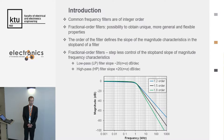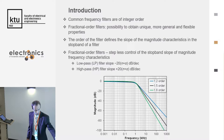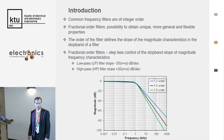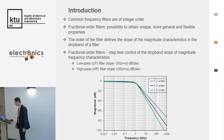You can see here an example: the magnitude frequency characteristic of a low-pass filter with order 1.2, 1.5, and 1.8. The slope of the characteristic is dependent on this order. So you can set this slope in the stop band by changing the order of the filter.